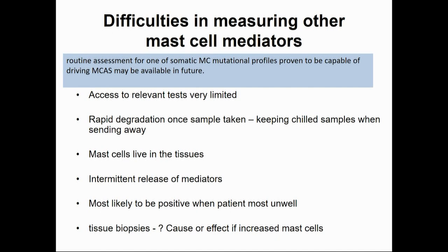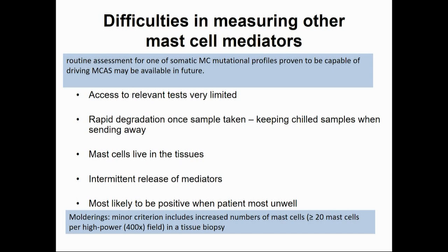What about tissue biopsies? It could be argued that increased mast cells could be either a cause or an effect of a process that's going on. But Muldrin includes in his definition, as a minor criterion, that increased numbers of mast cells in tissues should be accepted as a criterion.